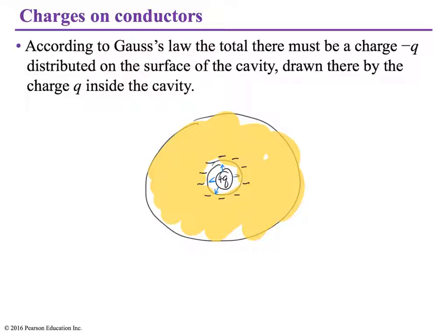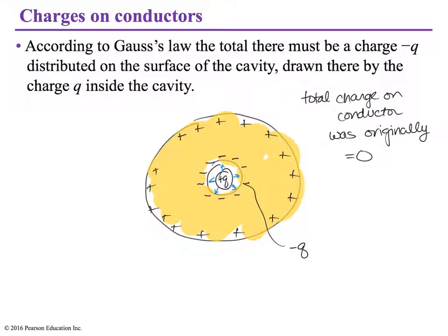Now, if the total charge on the conductor was originally equal to zero, then if we have a minus Q, the magnitude of the charge on this inner surface is minus Q, in order to maintain that total charge is zero, that means that a total amount of positive charge will have to arrange itself on the outer surface. And that amount of charge will be plus Q.